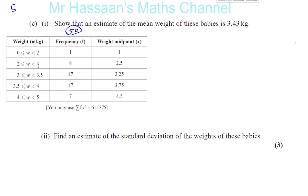So 8 babies were between 2 and 3 kilograms. We don't know their actual weights, so we estimate they were 2.5, taking the halfway value. In order to find an estimate of the mean weight, remember the mean is the total sum of all the weights divided by the number of babies. To find the total weights, we multiply the frequency by the midpoint for each category and add them together. We get the sum of fx — the sum of all the estimated weights.